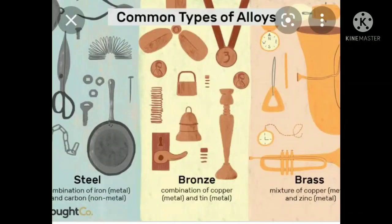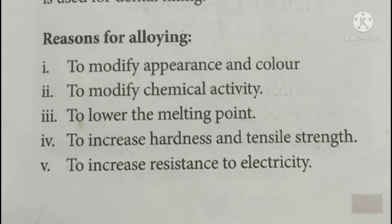The property of gold is enhanced or improved by adding copper. When you mix gold and copper, the property is totally different from its original character. The first reason we alloy metals is to modify their appearance and color. For example, stainless steel gives a good appearance and color because iron is alloyed with other metals like nickel and chromium, which give it a shiny appearance. So to improve the color of the metal, we can alloy one metal with another.